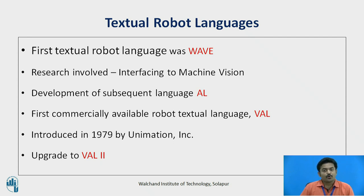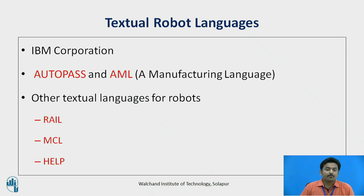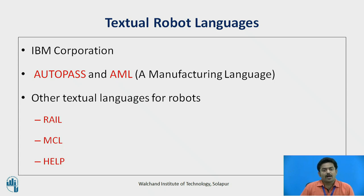This language was upgraded to VAL2 and released in 1984. Work in robot language development was also taking place at the TJ Watson Research Laboratory of the IBM Corporation around 1976. Two of the IBM languages were Autopass and AML, the second of which has been commercially available since 1982 with IBM's robotic products.